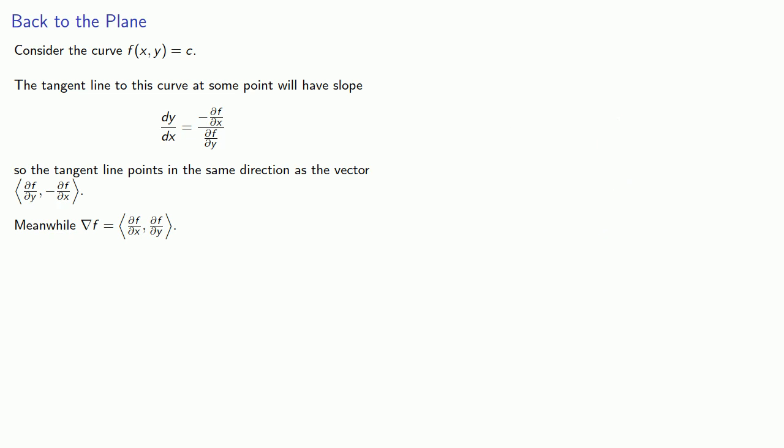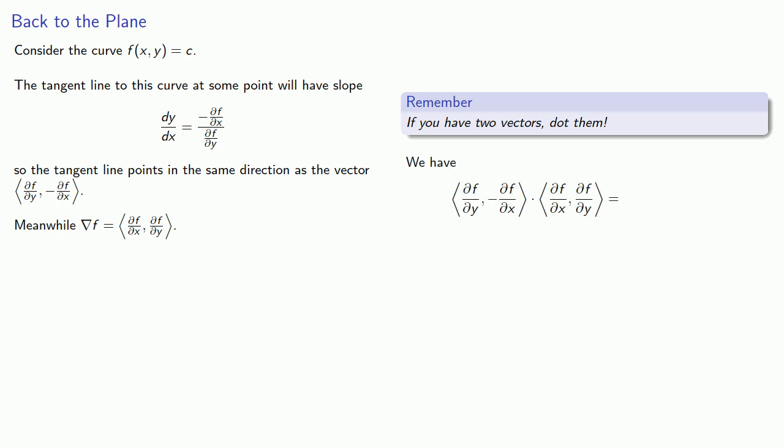And now we have two vectors, and as a useful rule and strategy in higher mathematics, if you have two vectors, find their dot product. Well, sure, why not? We have nothing better to do, so let's find the dot product of the two vectors.